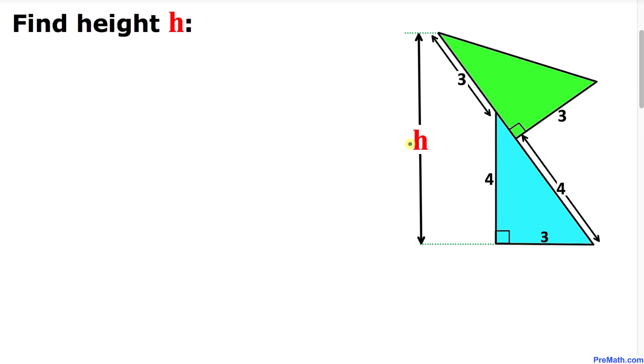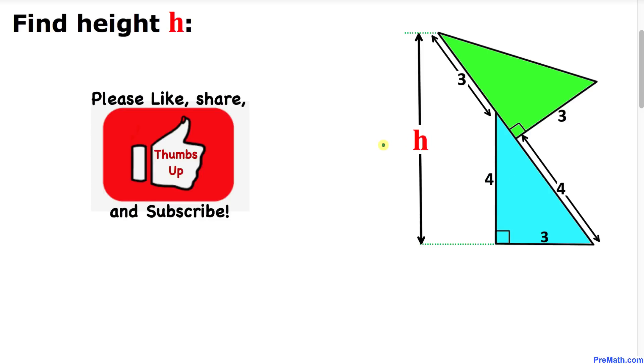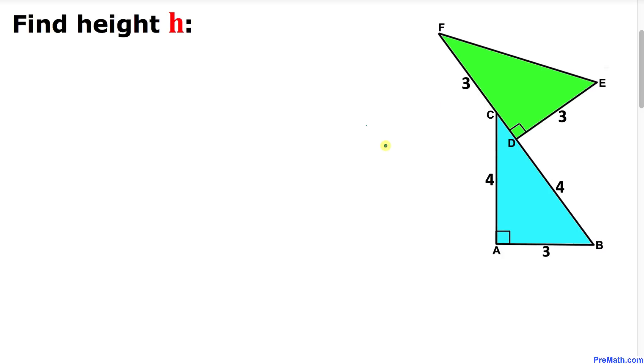Welcome to PreMath. In this video tutorial, we have a compound shape that consists of two right triangles—one is green, the other is blue. We are going to calculate the height h. Please don't forget to give a thumbs up to this video.